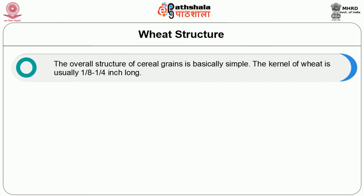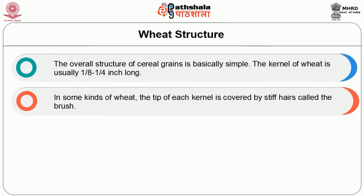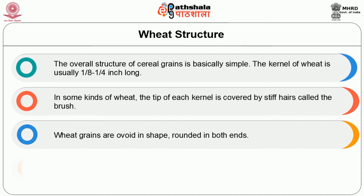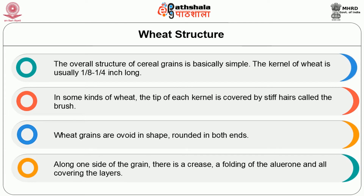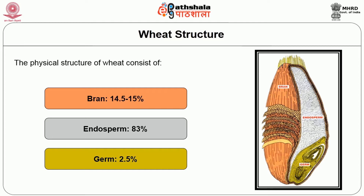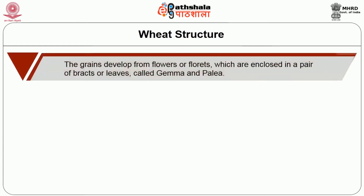Now let us move on to the wheat structure. The overall structure of the wheat grain is basically simple. The kernel of wheat is usually 1/8 to 1/4 inch long. In some kinds of wheat, the tip of each kernel is covered by stiff hairs called the brush. Wheat grains are ovoid in shape, rounded at both ends. Along one side of the grain there is a crease, a folding of the aleurone and outer covering layers. The physical structure of wheat consists of three important parts: bran, which makes up 14.5 to 15%; the endosperm, which contributes about 83% of the whole grain; and the germ, which accounts for 2.5%.